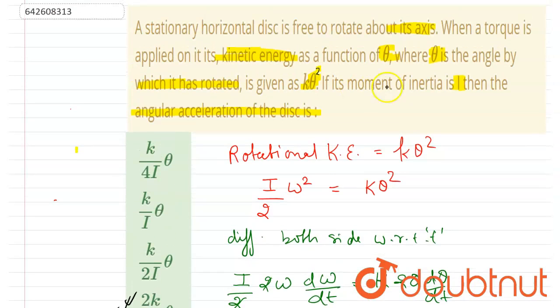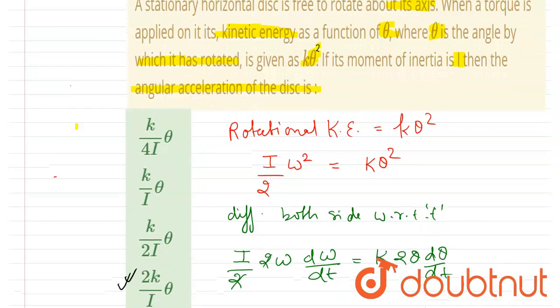So the moment of inertia is I, then find the angular acceleration. The angular acceleration is 2k theta by I. Thank you.